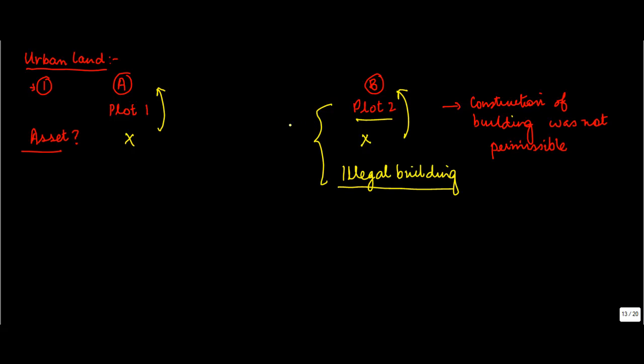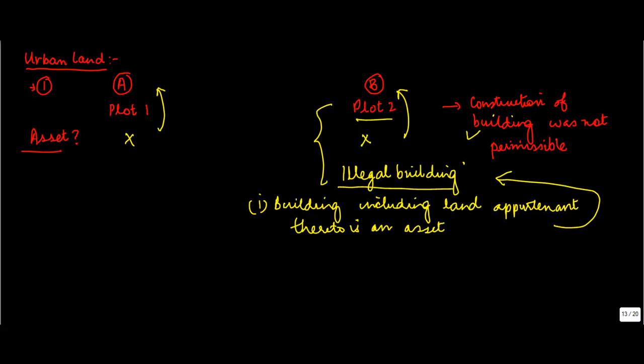Now, while for the purpose of this clause which says that urban land is not classified as an asset if construction is not permissible, however, clause 1 which provides that a building including land appurtenant thereto is an asset—this building along with this land will be classified as an asset because the other clause does not specify that the building has to be constructed on legal or illegal land.